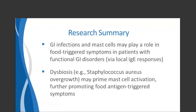As a summary of the research: GI infections and mast cells may play a role in food-triggered symptoms in patients with functional GI disorders. This is thought to be via localized IgE responses that are not necessarily detected in standard serum-based allergy tests. Additionally, dysbiosis with Staph aureus overgrowth may actually prime mast cell activation, which can further promote these antigen-triggered symptoms.